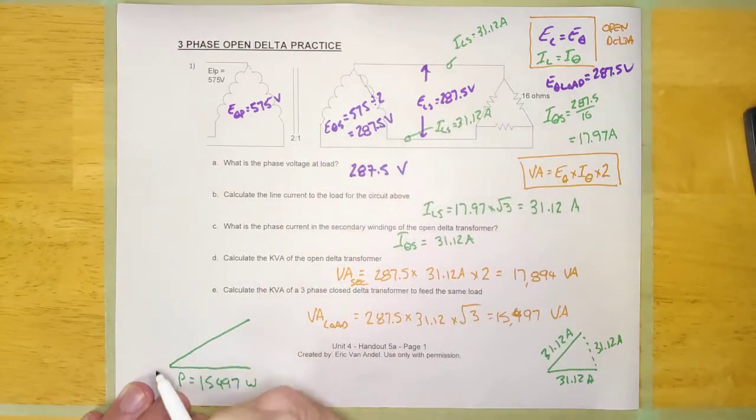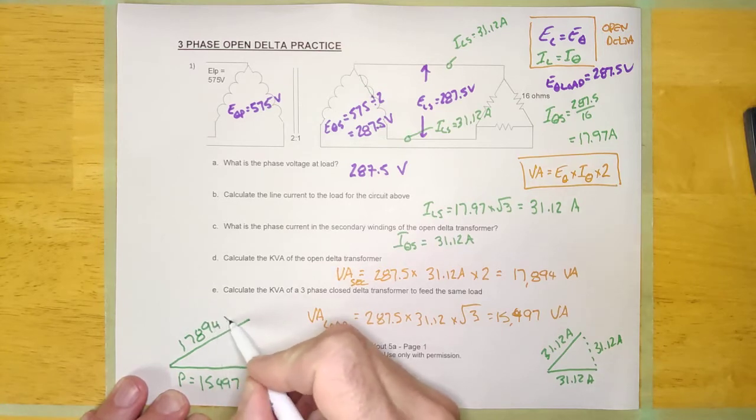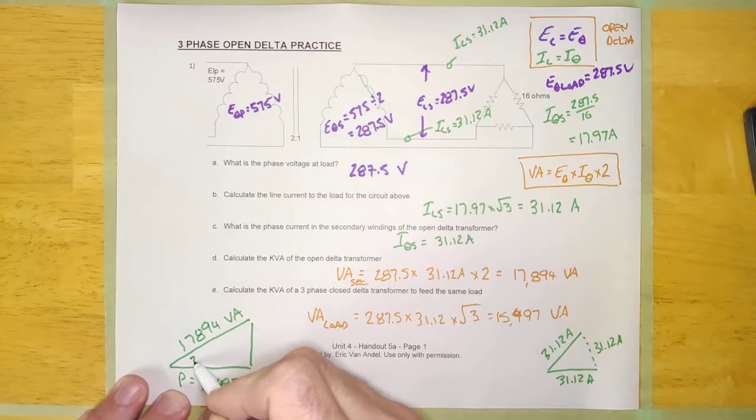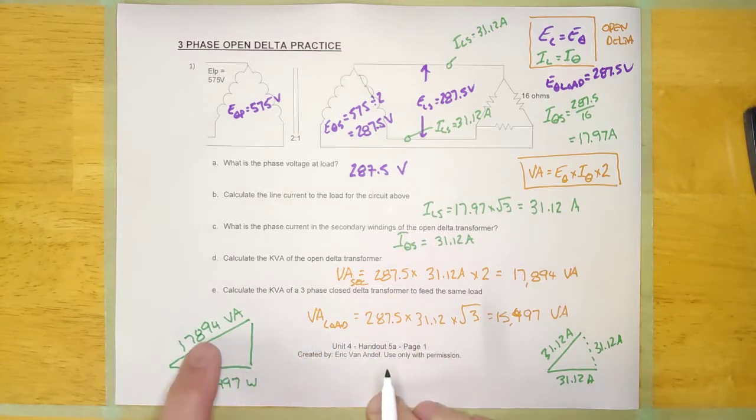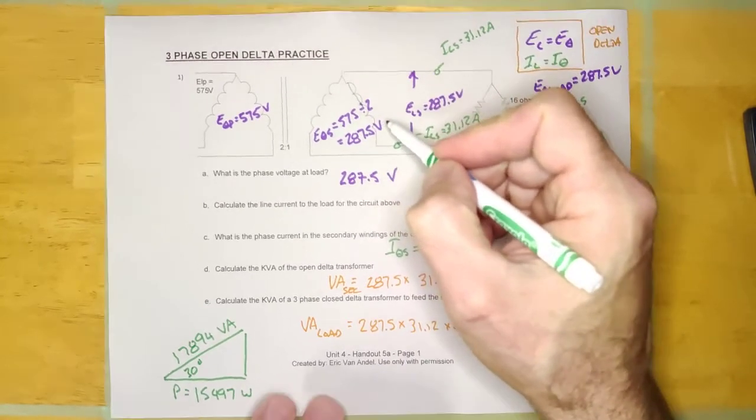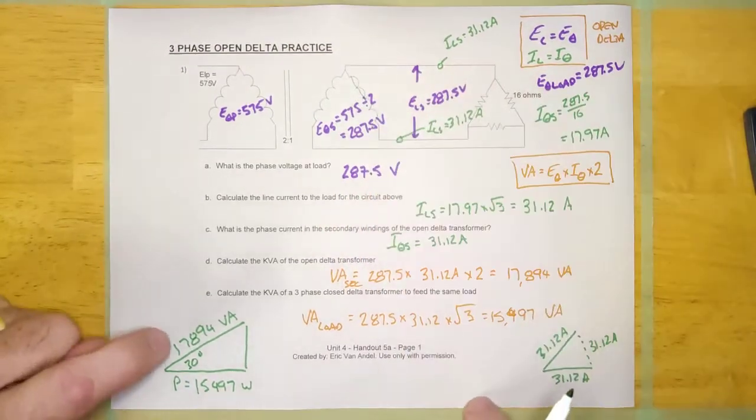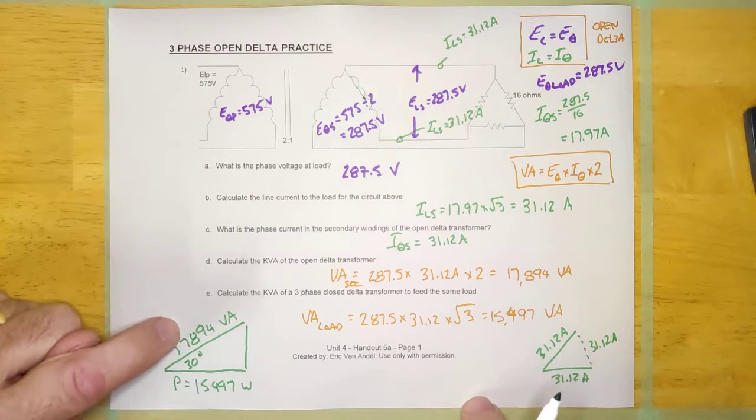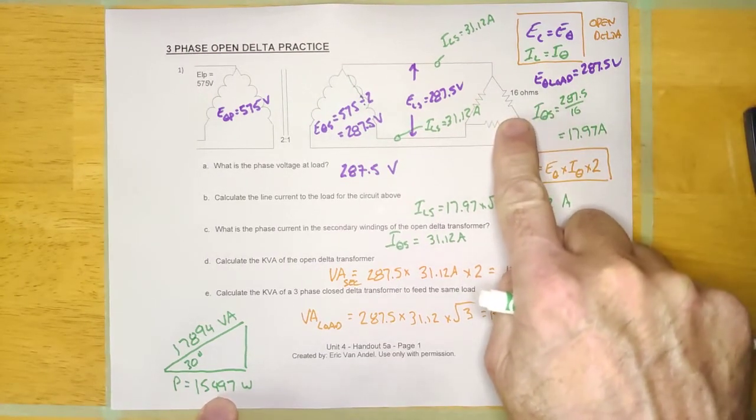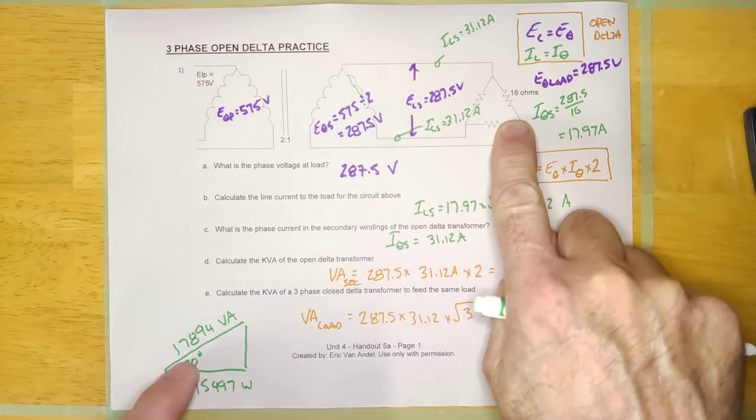So it would be fair to say guys that the power of that load is 15,497 watts, because it's a resistive load. And the VA for this transformer guys is 17,894 volt amps. And this is 30 degrees. All right guys, and that's the 30 degrees that the voltage and the current are out of phase in this transformer here.